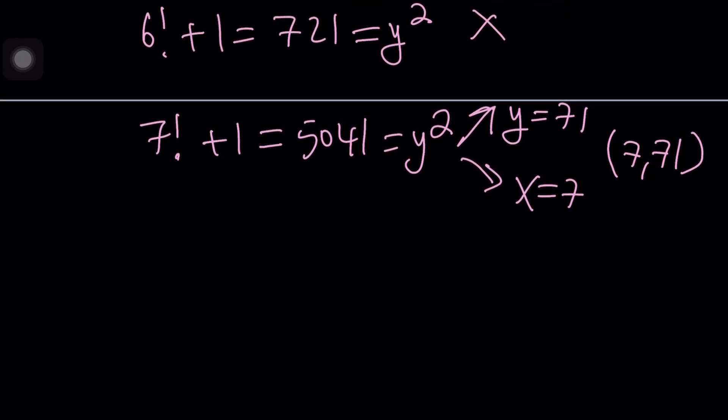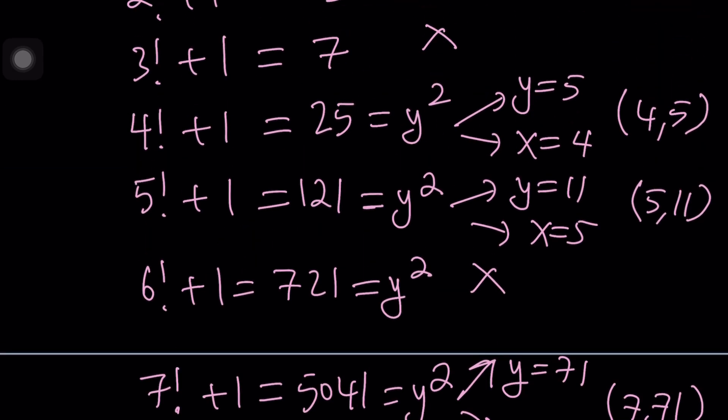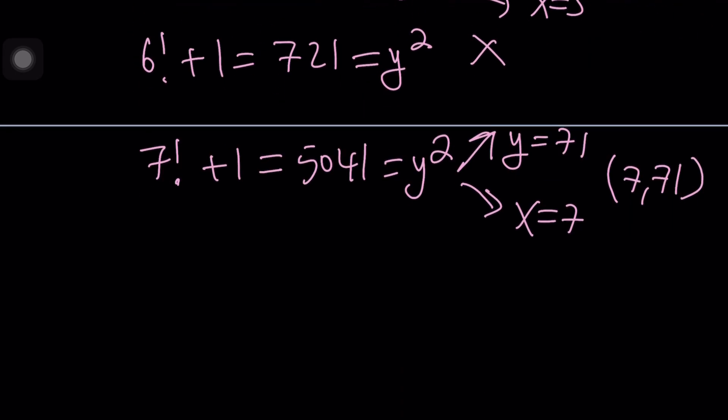First of all I want you to notice that y is odd. If you look at all these y values you're going to realize all these y values are odd. I'm not just saying based on those, y is odd because x factorial is even if x is greater than or equal to 2.